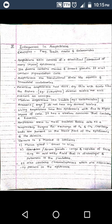Amphibians represent a transitional state between aquatic and terrestrial vertebrates - they can live both in aquatic and terrestrial mediums. Primitive amphibians had thick, dry skin with scales like that of fishes.